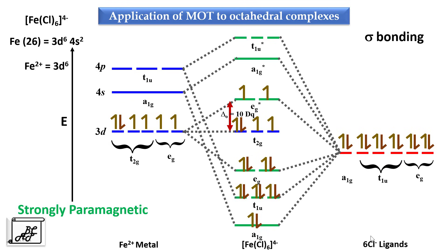We can see from the last two examples: if the ligand is a strong ligand, the electrons will get paired up into the t2g orbital; if the ligand is a weak ligand, once the t2g orbital is singly occupied, the next electron goes to the eg orbital. That is how we can study magnetic properties through molecular orbital diagrams.